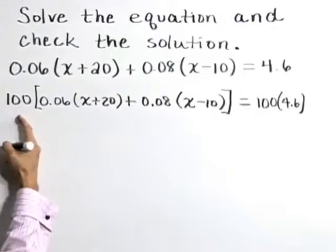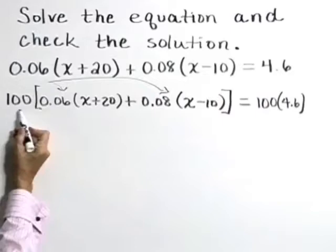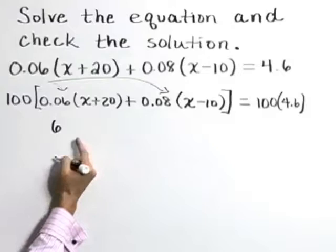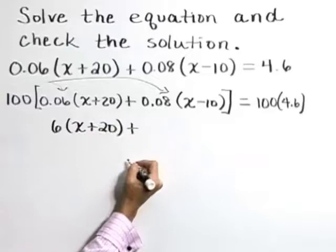Now, on the left, we need to distribute this 100 to both of our terms. 100 times 0.06 gives a product of 6, and then we'll take that product times the quantity x plus 20.